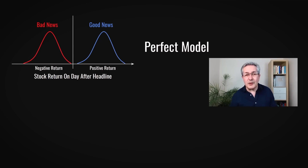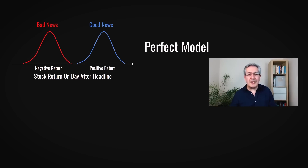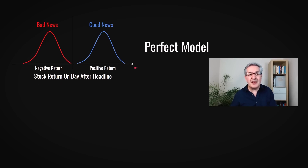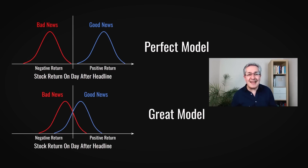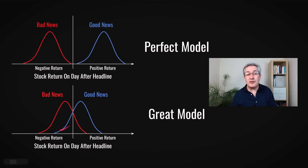Let's consider what an absolutely perfect model would look like. You'd have a distribution of returns split into two buckets. If the model identified a positive headline, then on the following day the return would always be positive if it was right. Conversely, if it thought it was a bad news story, it would have 100% accuracy in predicting negative returns. Of course, in the real world it never looks like that. In reality, a fantastic model would show that the average return on good news is higher than the average return on bad news — there'll always be some false positives and false negatives.